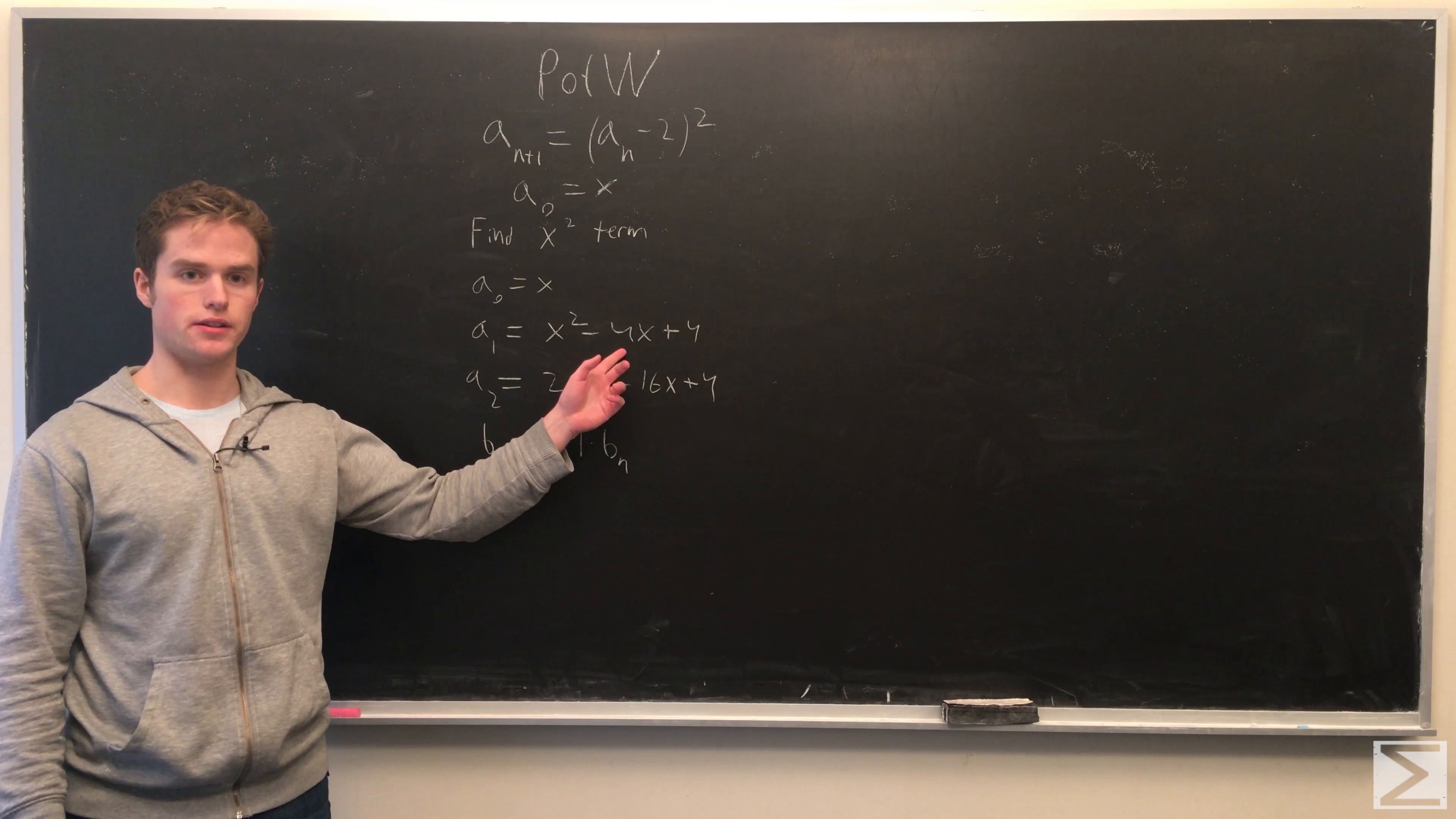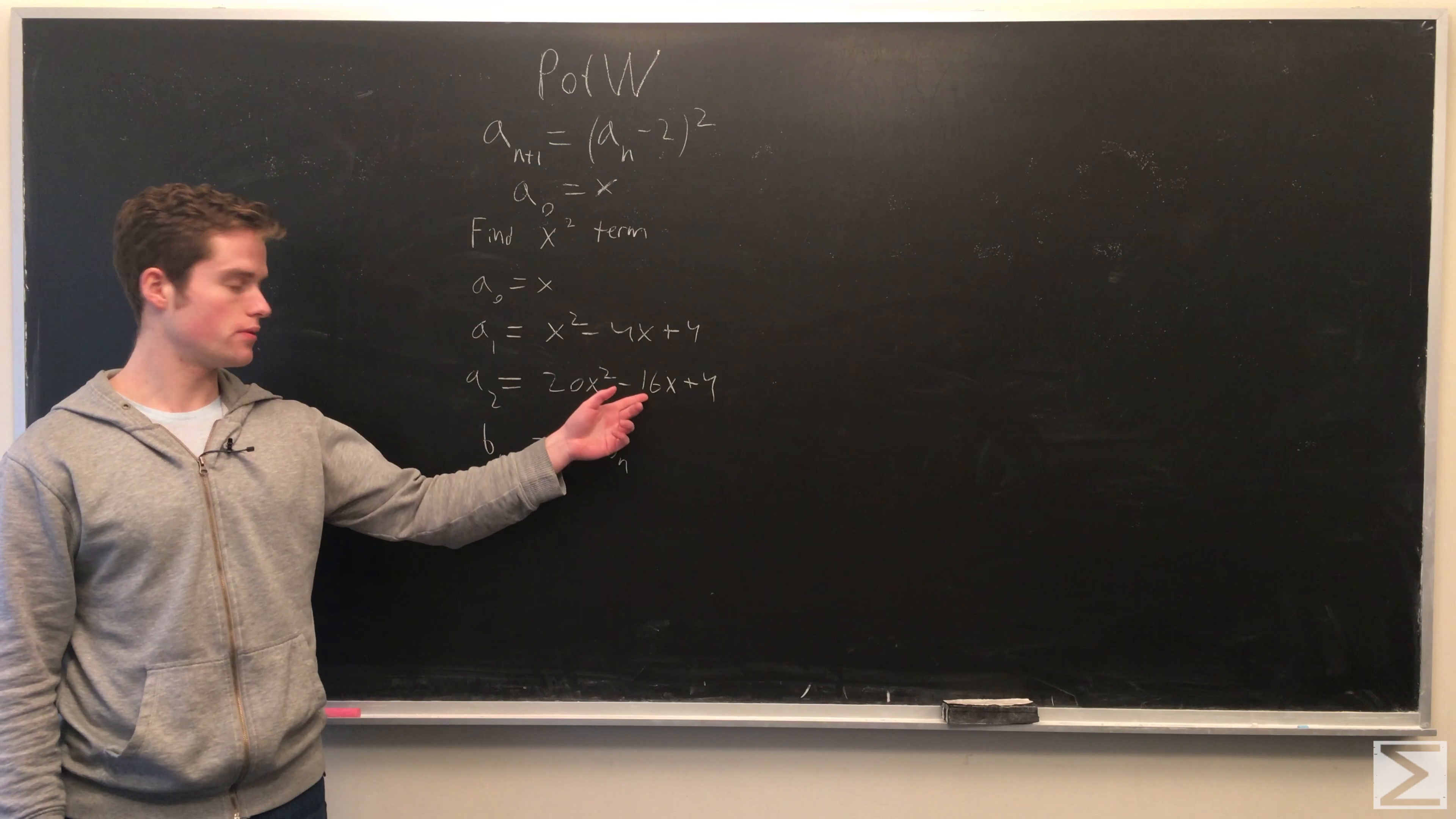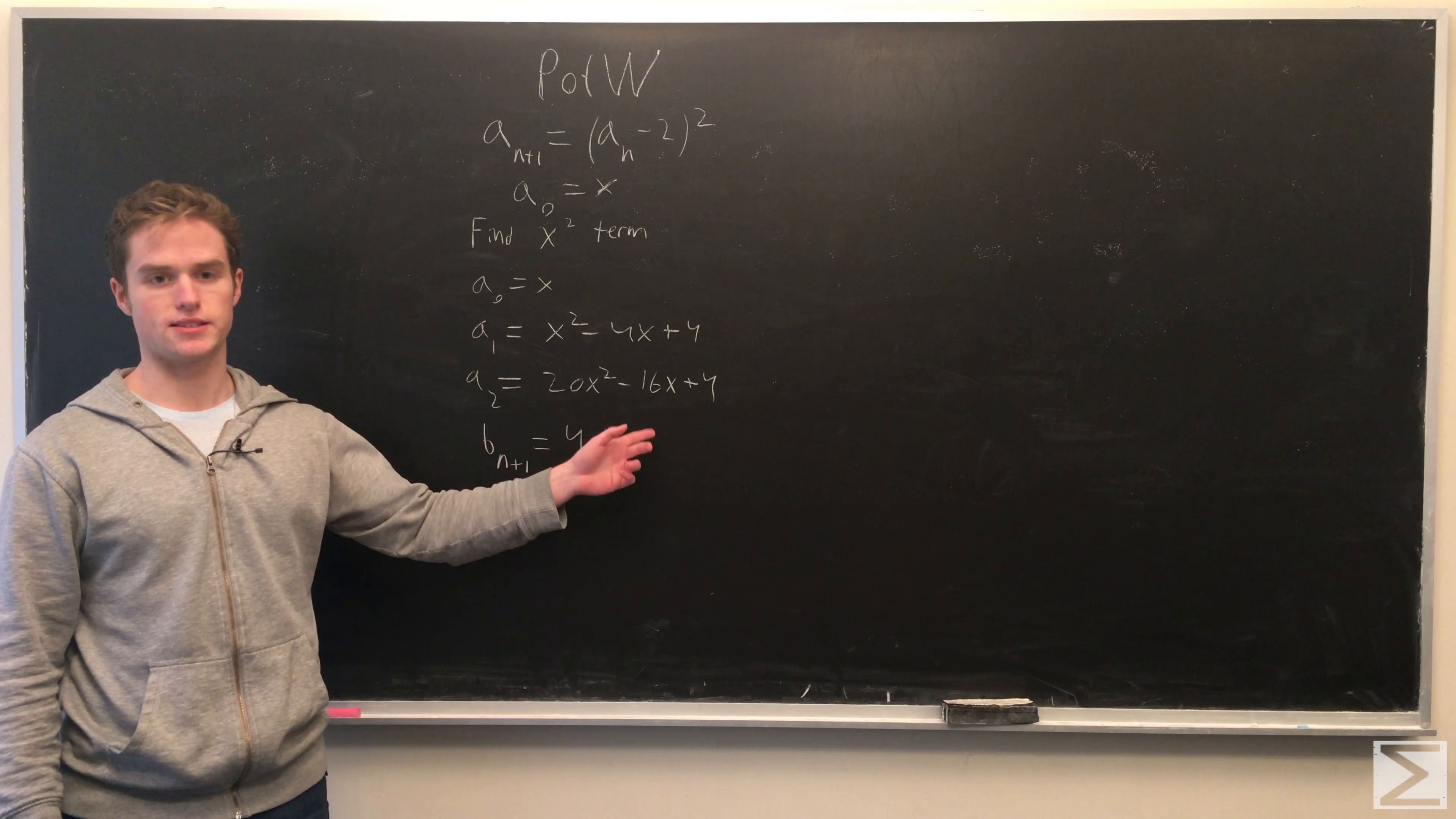If we call bn the coefficient of x in the term an. So, in a1, it's just 4. A2, it's minus 16, minus 4, minus 16.